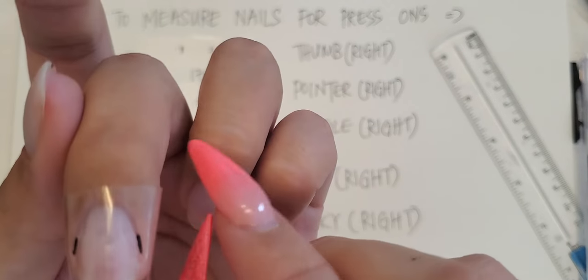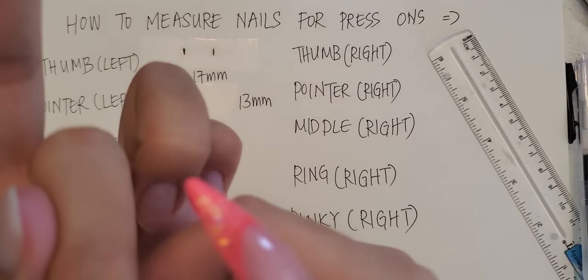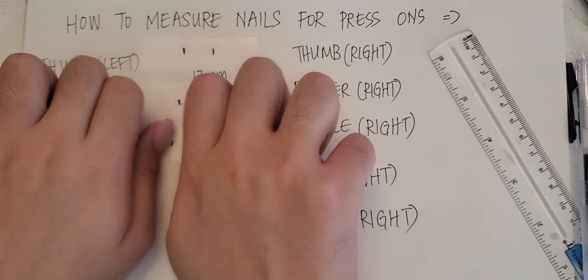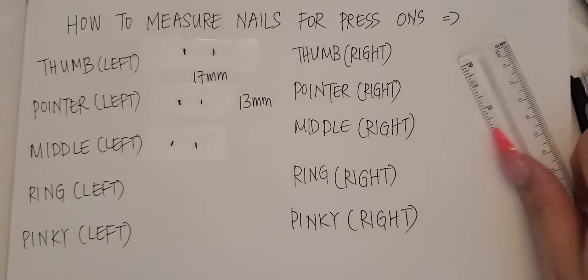Once you've got that, you're gonna take a piece of tape and you're gonna place it on a piece of flat surface. And you can go ahead, take the ruler.